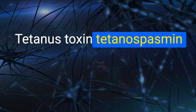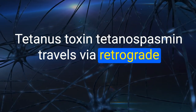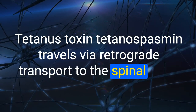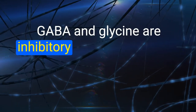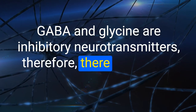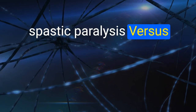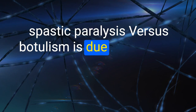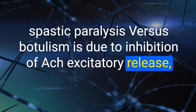18. Tetanus toxin (tetanospasmin) travels via retrograde transport to the spinal cord. GABA and glycine are inhibitory neurotransmitters; tetanus causes a lack of motor inhibition, leading to spastic paralysis. Botulism, in contrast, is due to inhibition of acetylcholine (excitatory) release, causing flaccid paralysis.